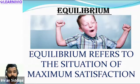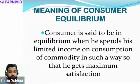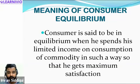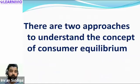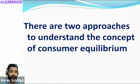I told you that equilibrium is basically a situation of maximum satisfaction — it refers to a situation where a person is maximally satisfied. Then I covered the meaning of consumer equilibrium: a consumer's equilibrium is a situation where a consumer spends his income in such a way that he is getting the maximum amount of satisfaction from any good or service. I also told you that there are two approaches to understand consumer equilibrium, given by two different economists — Professor Alfred Marshall and J.R. Hicks and Allen.